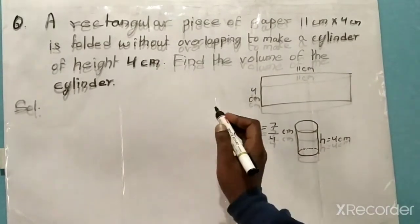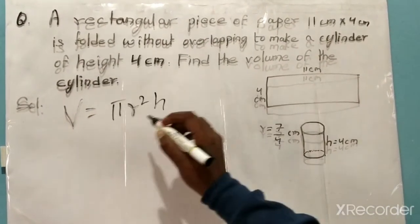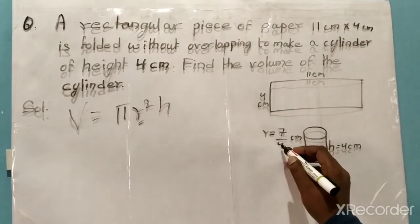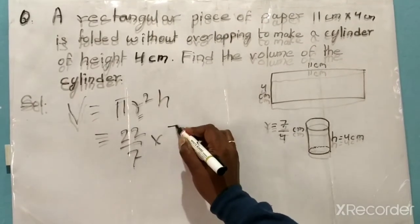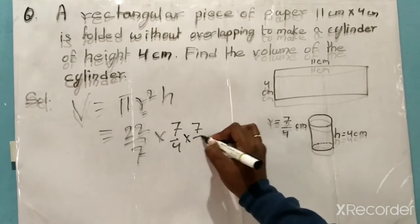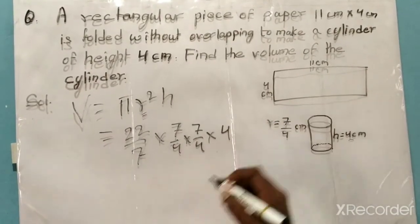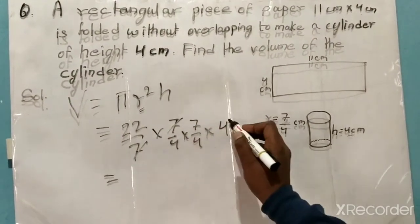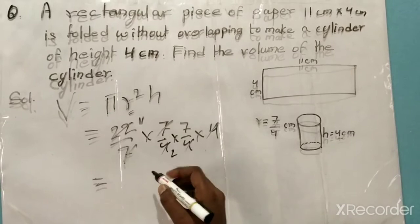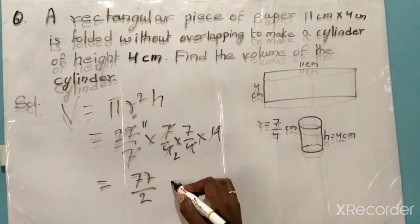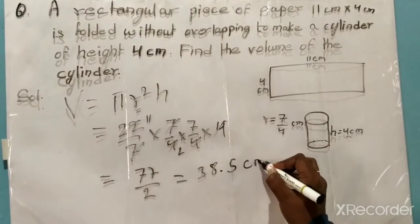The next step is to find the volume of the cylinder. The formula is V equals πr²h. r is 7/4 centimeter and h is 4 centimeter. Substituting: V equals 22/7 into (7/4)² into 4. The 7s cancel and the 4s cancel, giving 22 into 7/2, which equals 77/2. So the volume is 38.5 centimeter cube.